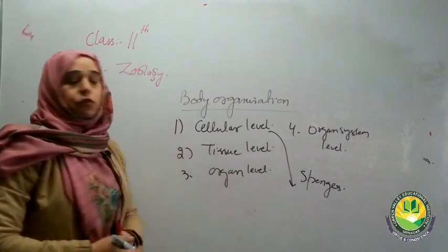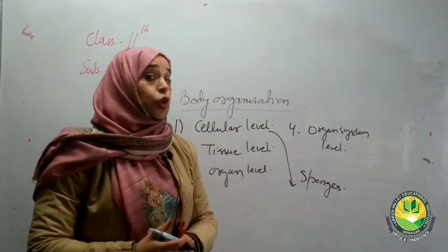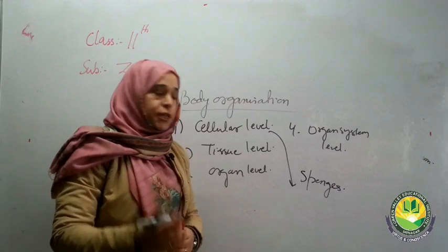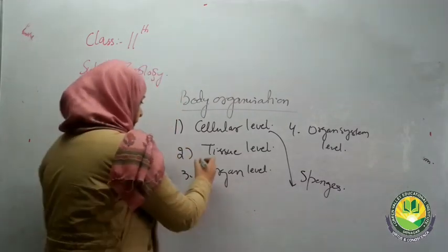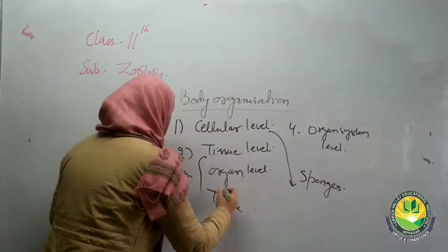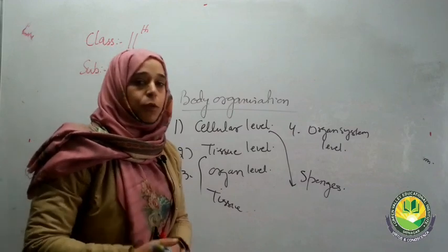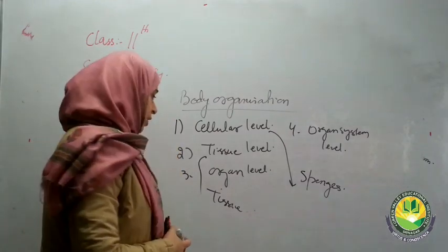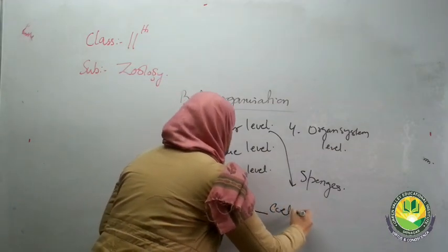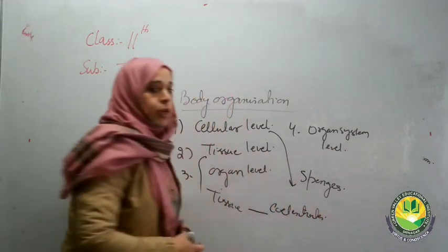At the tissue level, cells show coordination, division of labor, and form tissues. Those tissues then undergo different types of processes. This level of organization can be seen in another group of animals known as the Cnidarians (coelenterates).